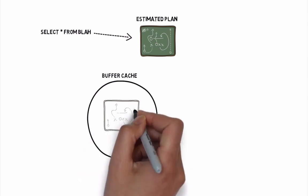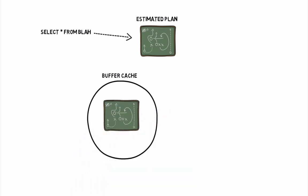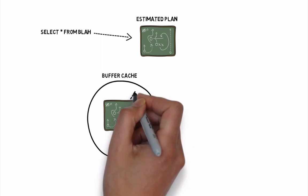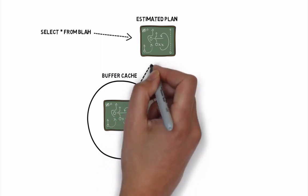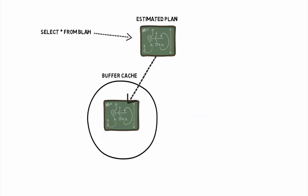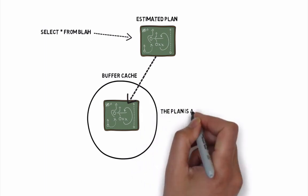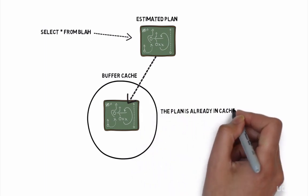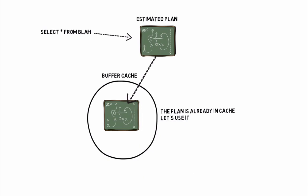If an actual plan is found that matches the estimated one, then the optimizer will use the existing plan, since it's already been used before by the query engine. This reuse avoids the overhead of creating actual execution plans for large and complex queries. Each plan is stored once.